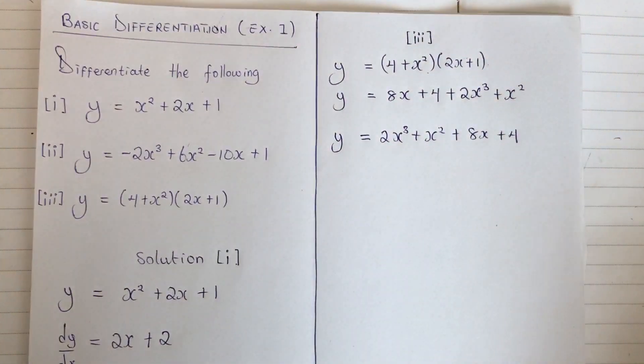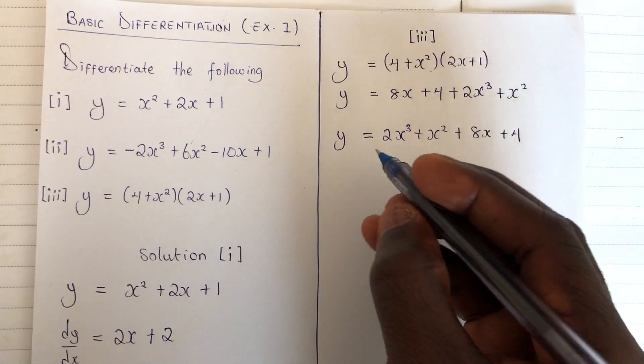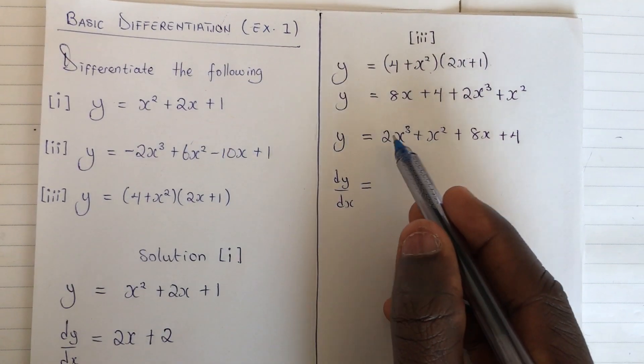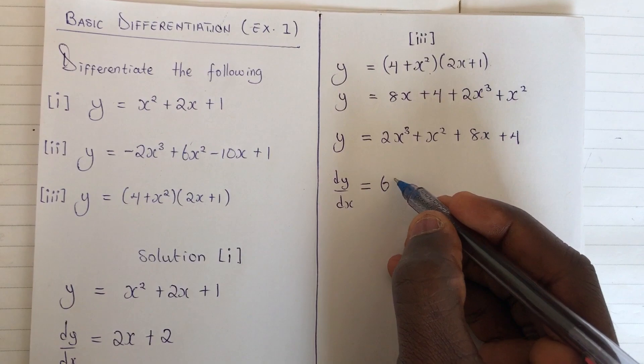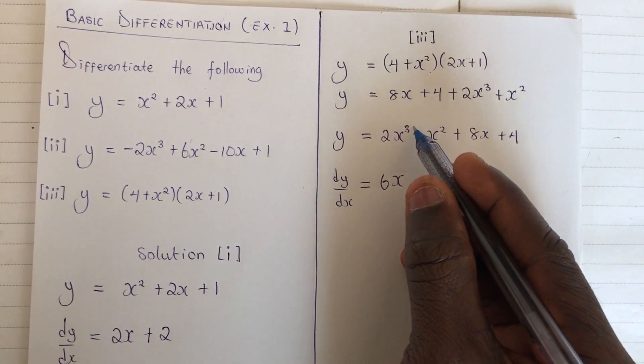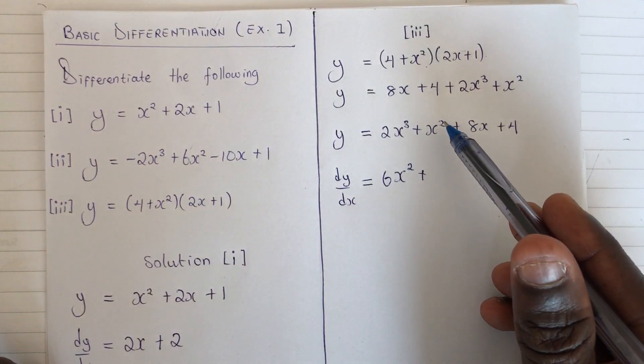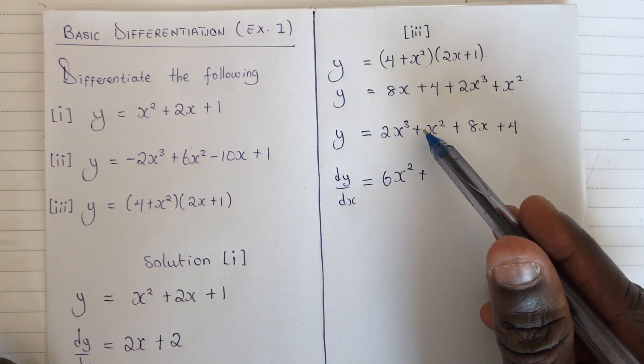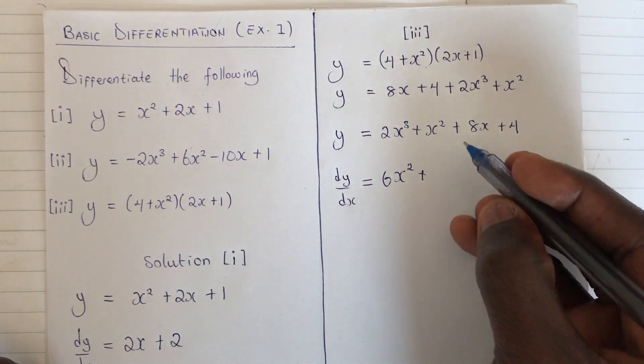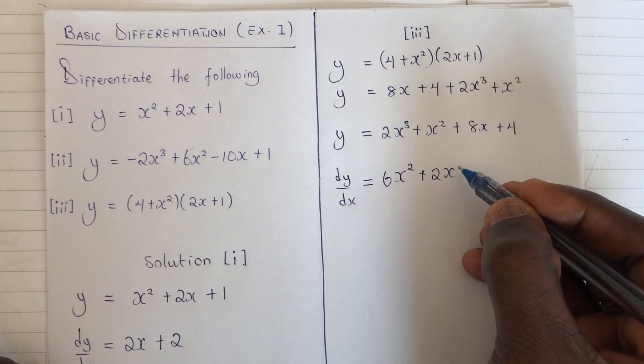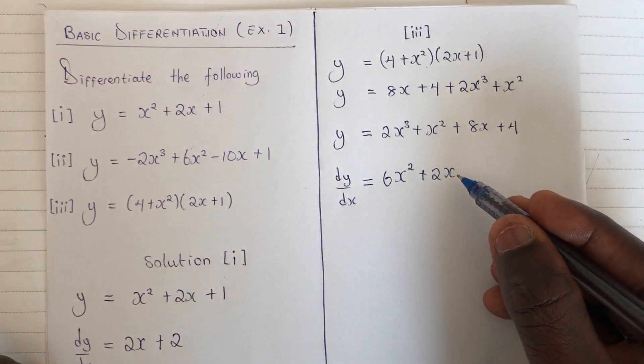So now we have y to be this, we can now differentiate it. So therefore dy/dx equals: now 3 times 2 you have 6x, reduce the power by 1, 3 minus 1 you have 2. Let's move on to the next thing. We have 2 times this x which is the 1 in front of the x, we have 2x. Reduce the power by 1, it is still x to the power 1, so you leave it there.